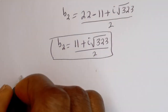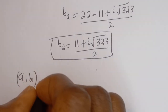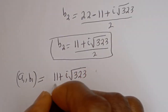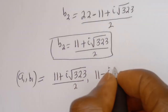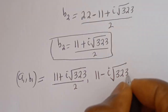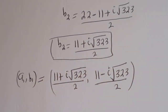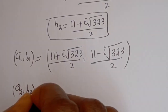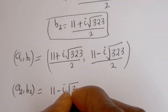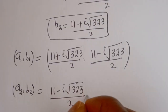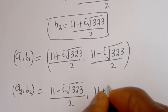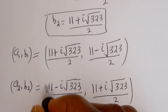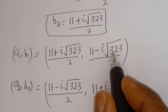Therefore our final answers are: (A1, B1) equals ((11 plus i√323)/2, (11 minus i√323)/2), and (A2, B2) equals ((11 minus i√323)/2, (11 plus i√323)/2). You can see that A1 equals B2 and B1 equals A2. We can check to confirm if this answer is correct.